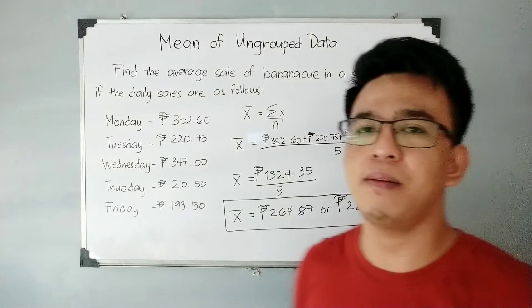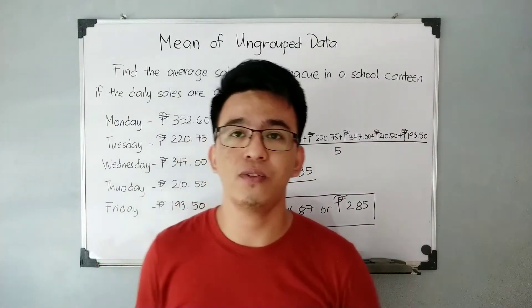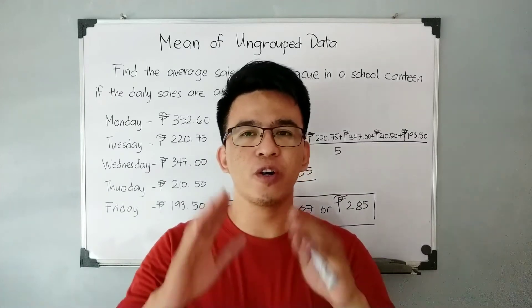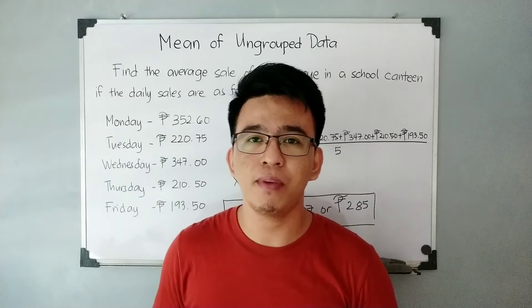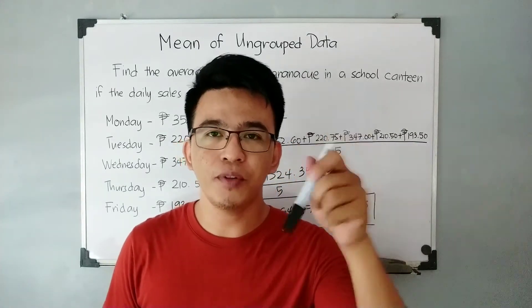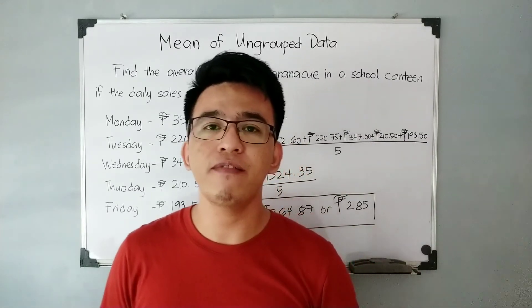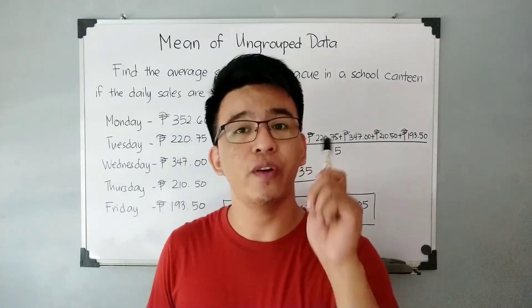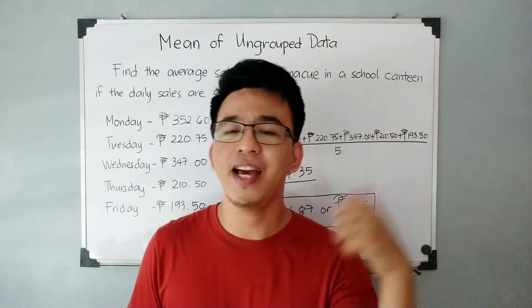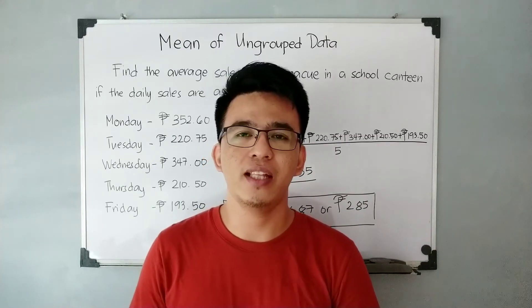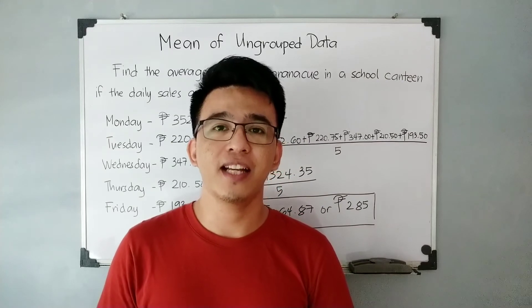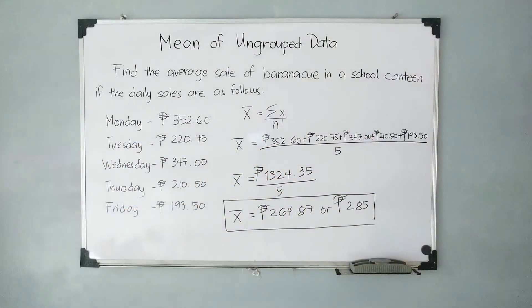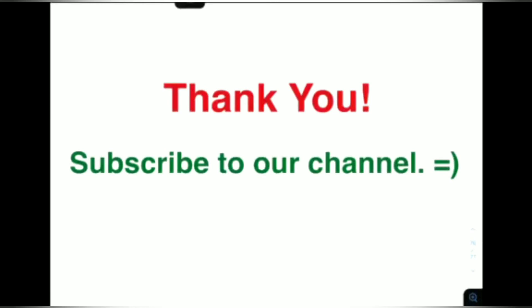I hope that our 2 examples have given you learning on how to calculate for the mean of a given ungrouped data set. If you have any questions about our discussion or if you have a requested topic you want me to discuss, feel free to put it in the comment section. By the way, we also have a video about the mean, median, and mode of ungrouped data — I'll put the link in the description box. If you're new to my channel, don't forget to like and subscribe for more videos. God bless you. Again, it's me, Teacher Goin. Maraming salamat. Bye-bye!